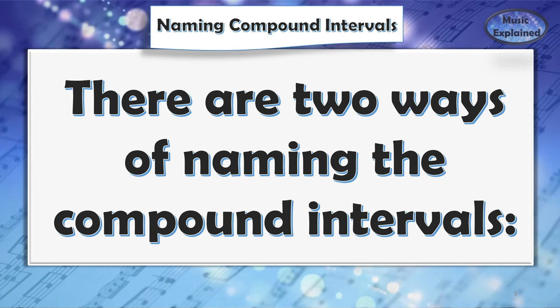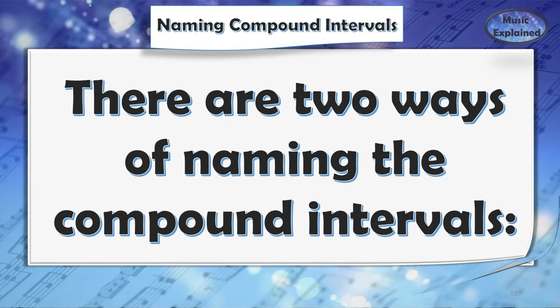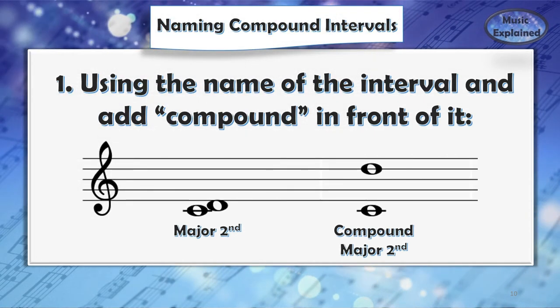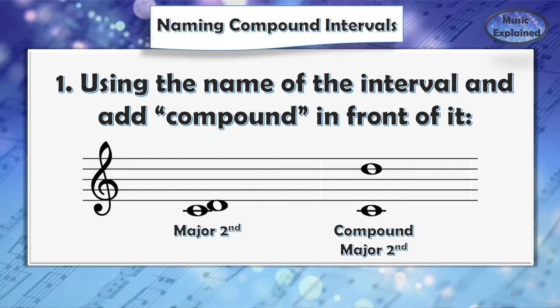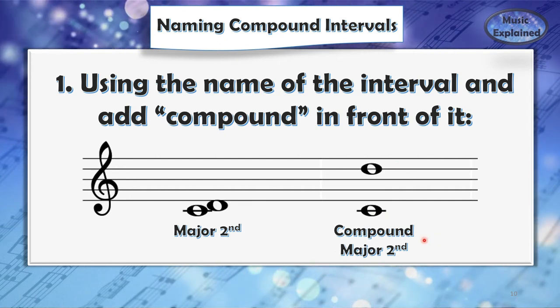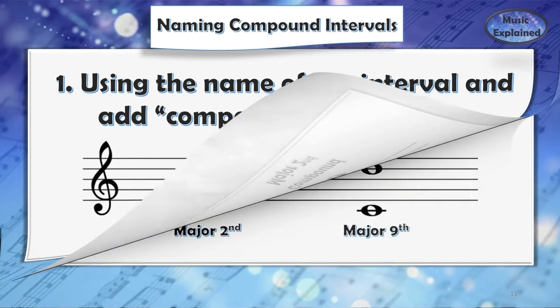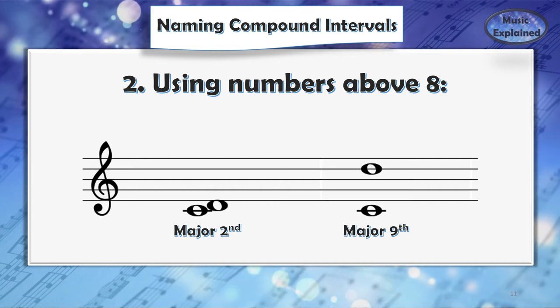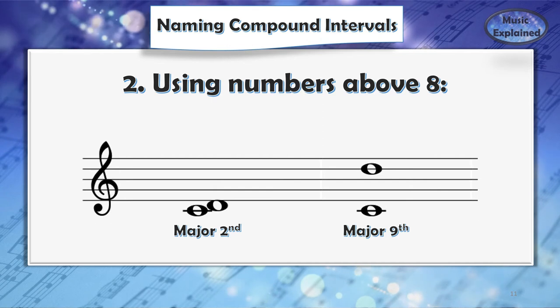There are two ways of naming the compound intervals. First, using the name of the interval and add compound in front of it. For example, this is a major second, C-D, and this one right here, C and D an octave higher, is a compound major second. The second way is using numbers above eight. Right here we have a major second, and using the plus seven rule, we get a major ninth.